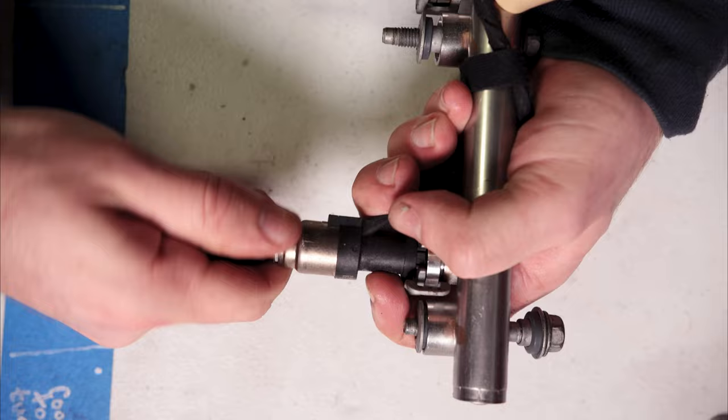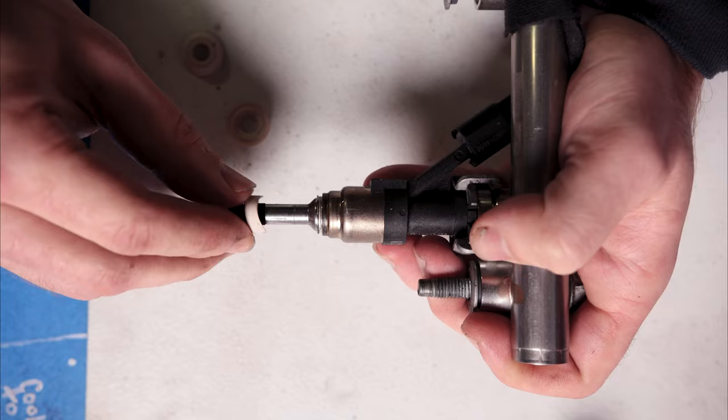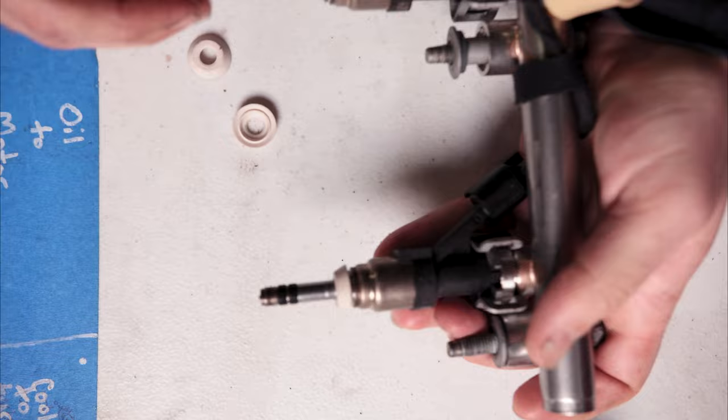Now we're going to install these little umbrellas. You're just going to sit them on there right like that. These should make it nicer the next time you need to remove your injectors.